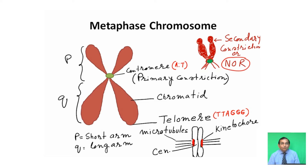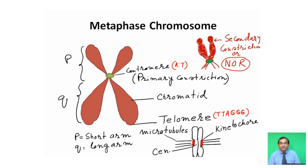The centromere or primary constriction is an AT-rich region — it is rich in adenine and thymine — and more than 90% AT is present in the centromeric region. Besides the primary constriction and secondary constriction, the end of the chromosome is called the telomere.